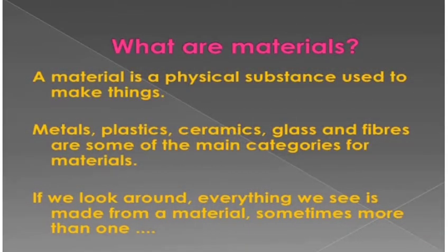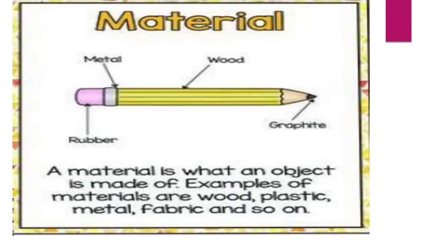What are materials? A material is a physical substance used to make things. Metals, plastics, ceramics, glass, and fibers are some of the main categories of materials. If we look around, everything we see is made from a material — sometimes more than one. Some objects are made from more than one material.